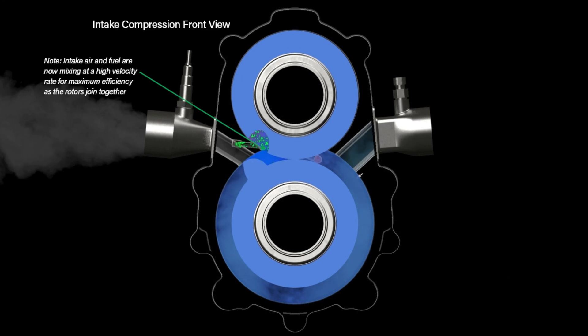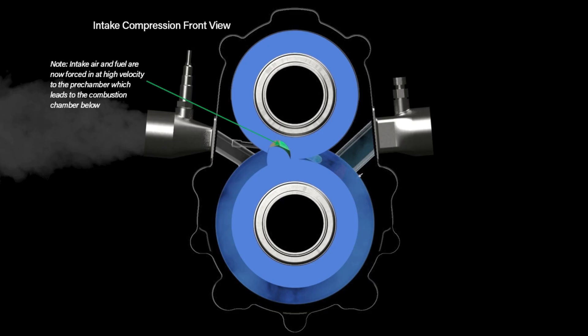Next, we see the intake air and fuel are now mixing at a high-velocity rate for maximum efficiency as the rotors join together. And then the intake air and fuel are now forced in at high-velocity to the pre-chamber, which leads to the combustion chamber below.